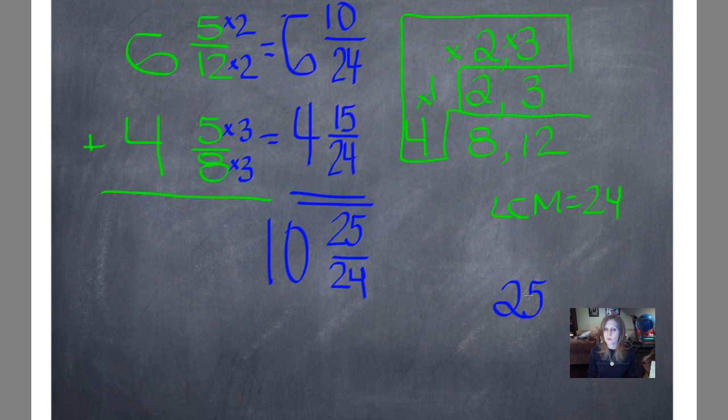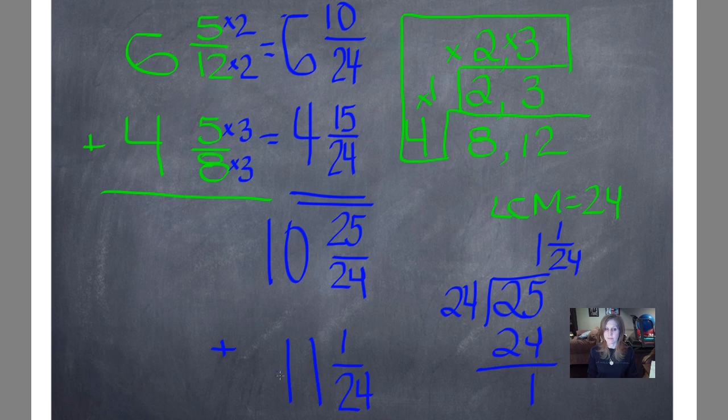So, if I was putting this 25 goes in the house, 24 goes and knocks on the door, 24 goes into 25 one time. 24 times 1 is 24. My remainder is 1, so that's my numerator. And my denominator stays the same. I essentially have to add this right here, this whole number, to this number here. So, my new fraction is 1 24th. But that whole number, I take and add to this. So, 10 plus 1 is 11. So, my final answer is 11 and 1 24th.